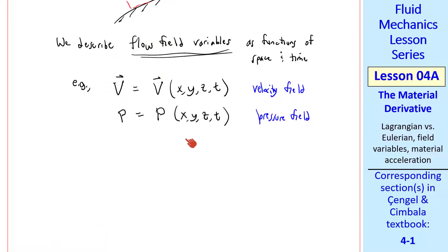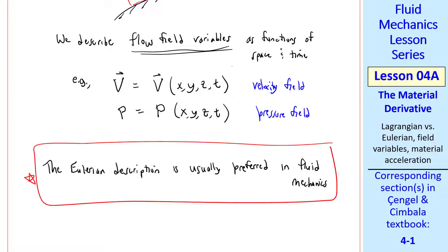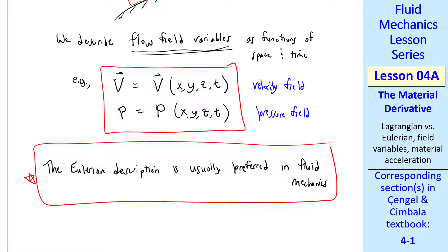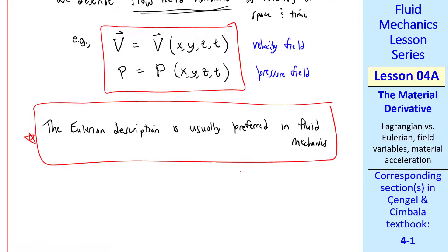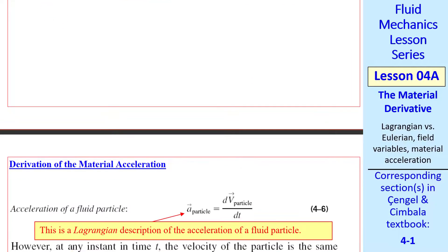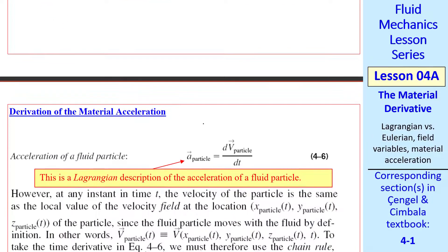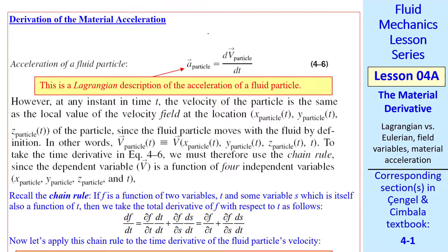The Eulerian description is usually preferred in fluid mechanics, but it can be more difficult to come up with these flow field variables, and we have to be careful how we apply the laws of physics. This leads us to a discussion of something called the material derivative and the material acceleration.